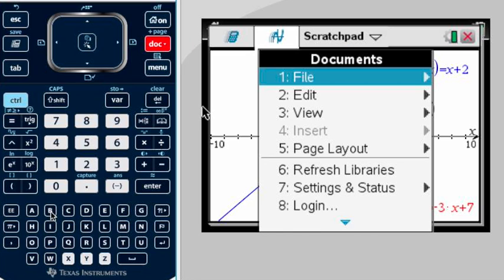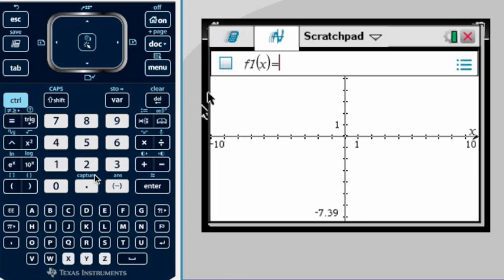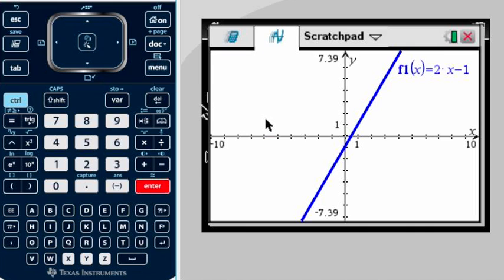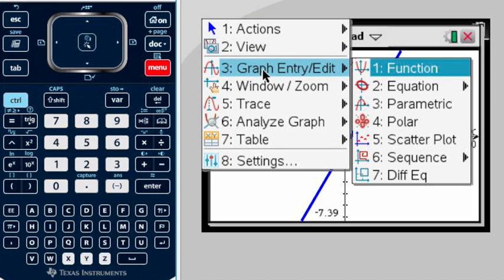I'm going to select the graphing part again and enter f1(x) = 2x - 1. For my second equation, I'm going to press enter. But what if your second equation is in standard form?